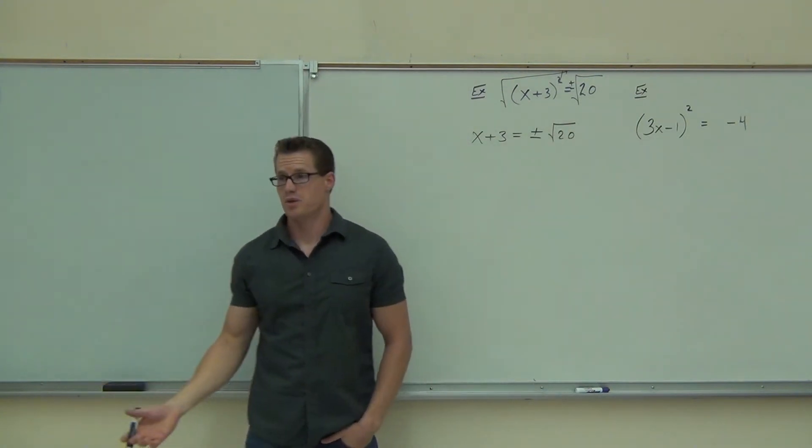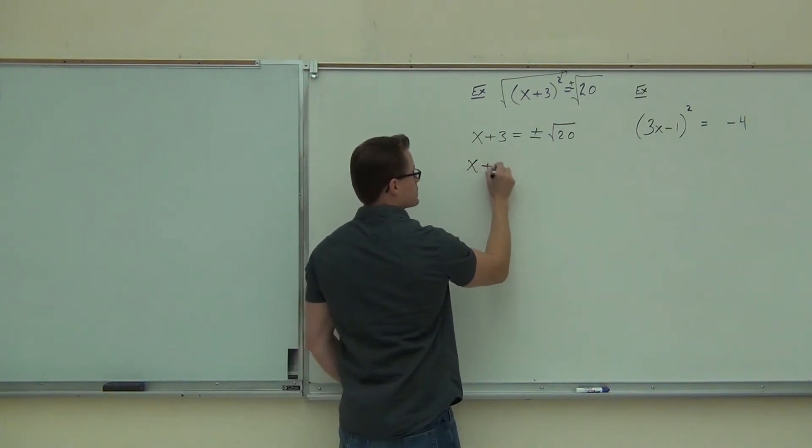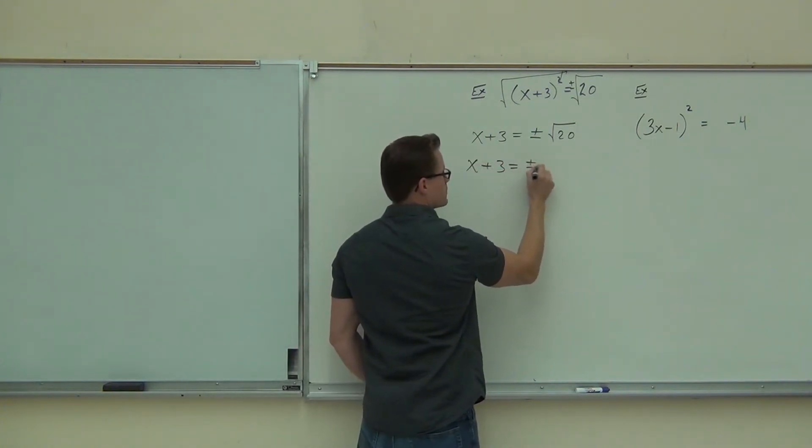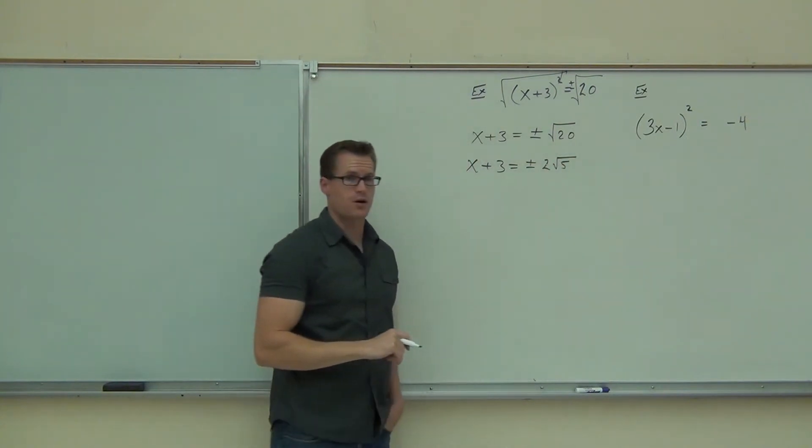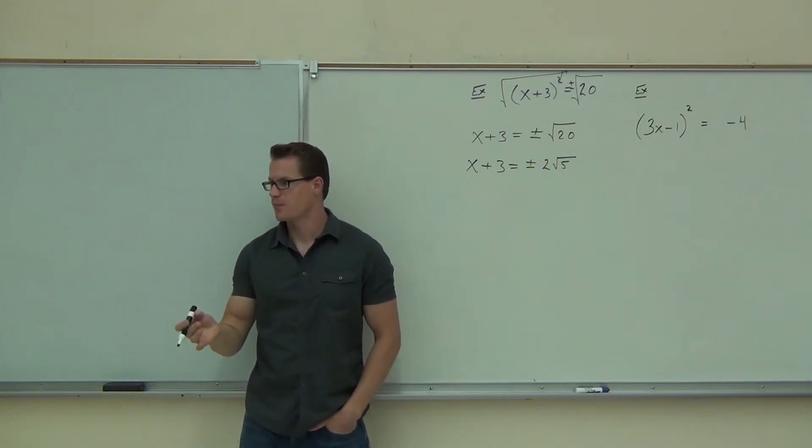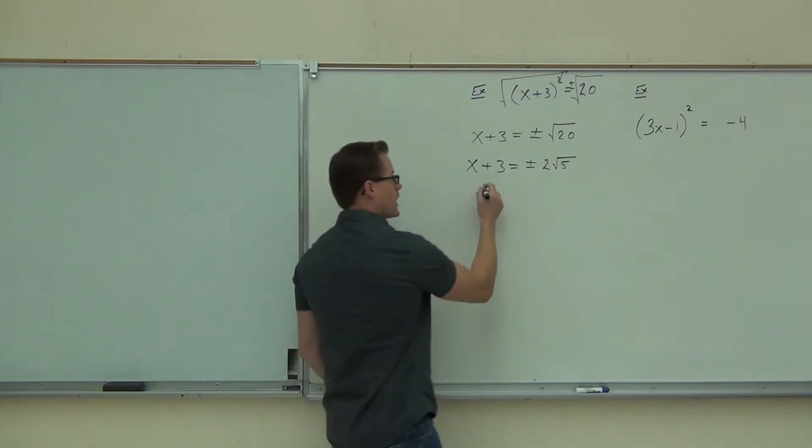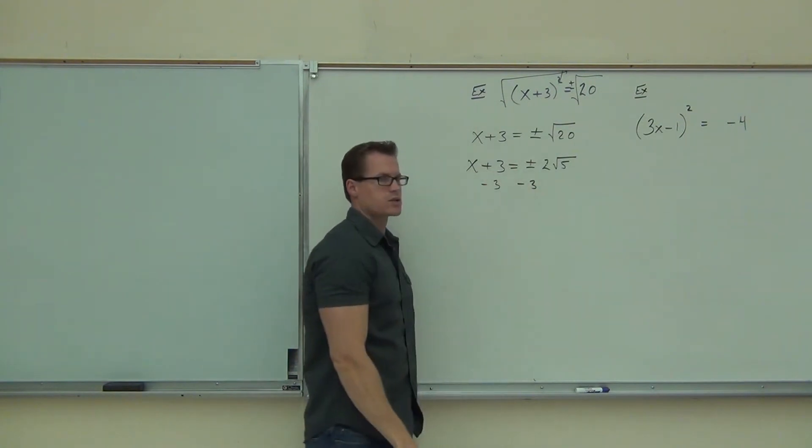We have x plus 3 equals plus or minus the square root of 20. We've already seen the square root of 20 already today. That's 4 times 5. That's going to be 2 root 5. So we get x plus 3 equals plus or minus 2 root 5. Did you make it that far? Now, we're not quite done. We need to get x by itself.